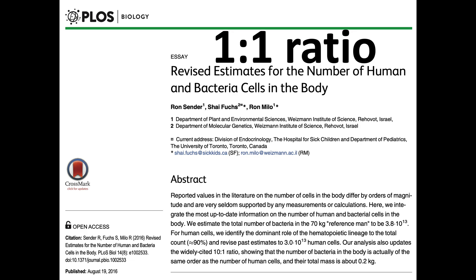Historically in the scientific literature, it was estimated — as you can see the widely cited 10-to-1 ratio. This is not just bloggers; these are scientists. So it's widely cited. But these authors suggest evidence that the ratio between bacterial cells in the body and our human cells is actually one-to-one.